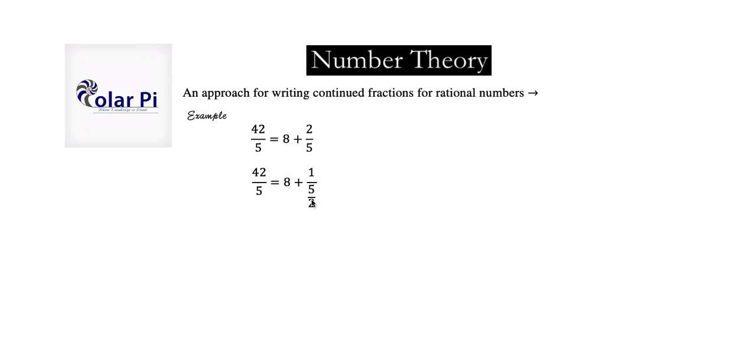Now we're going to do 5 over 2 here the same way we started with 42 over 5. We're going to look at the quotient and the remainder when we do 5 over 2. When we do 5 over 2, we get 2 plus 1 over 2. And now the process is terminated here. So this one is a short one. And every rational number can be represented as a finite continued fraction.